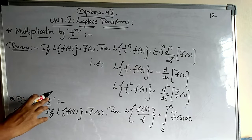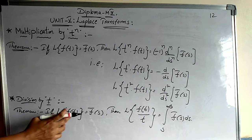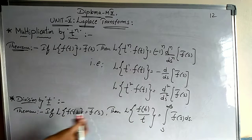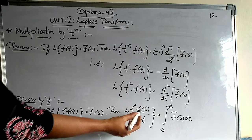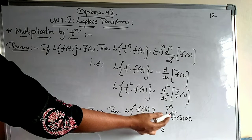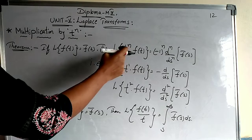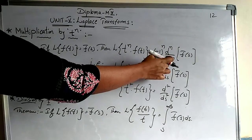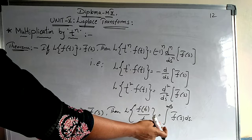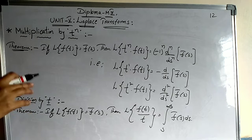The next important method is division by t. The statement is: if Laplace of f(t) is equal to F̄(s), then Laplace of f(t)/t is equal to the integral from s to infinity of F̄(s) ds. Simply remember: any function multiplied by t gives derivation; any function divided by t gives integration with limits s to infinity. These two statements are very important — they carry direct statement marks.